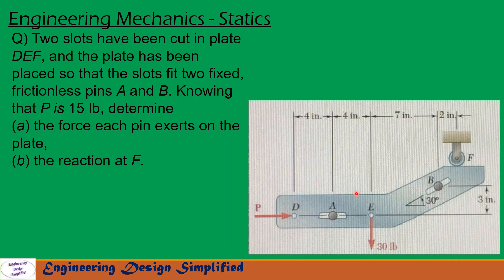In this problem, a plate is arranged so that at A and B two slots are cut and two frictionless pins are fixed. There is a force of 30 LB acting at point E and a force P equal to 15 LB acting at point D. We need to find the reactions due to the pins on the plate, and the reaction at F. Let us see in the coming slides how to solve this problem.